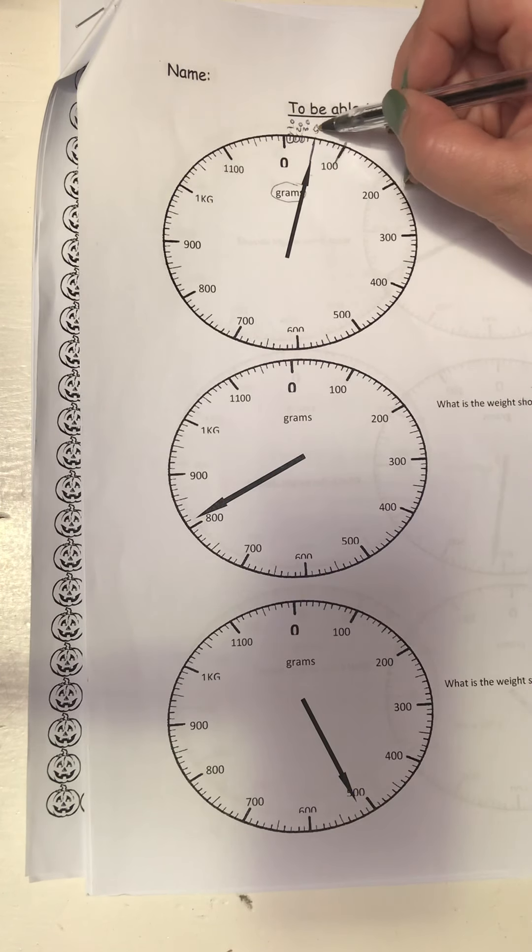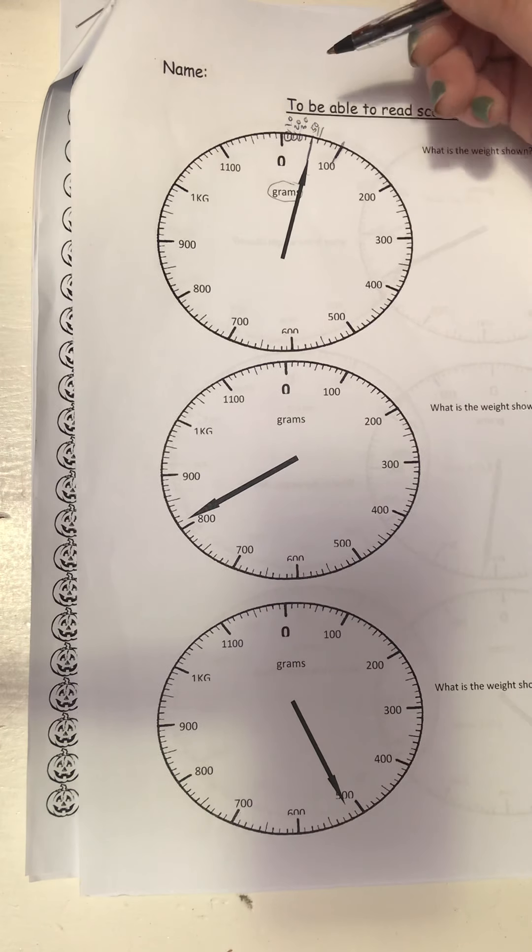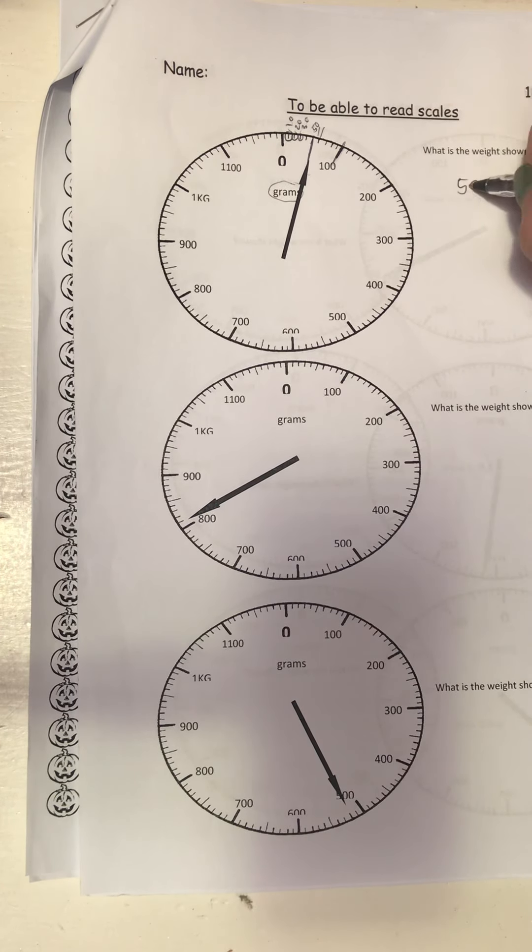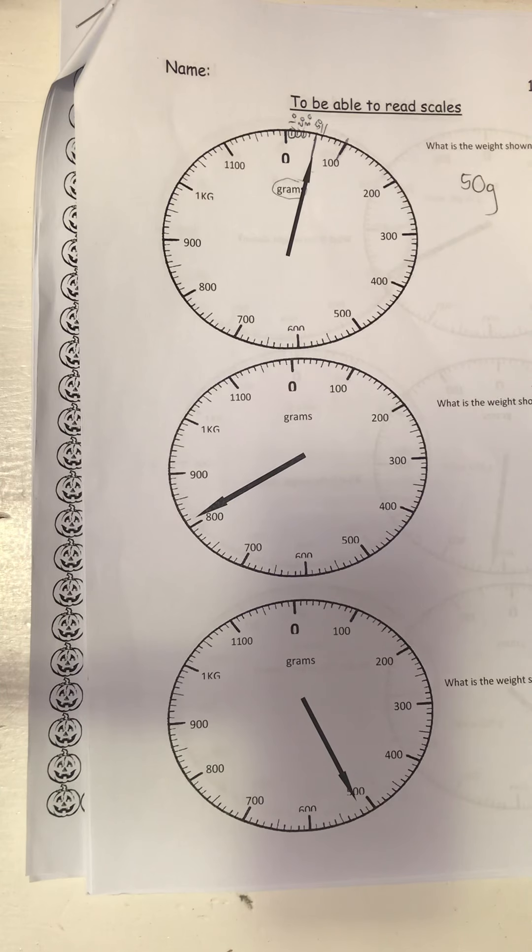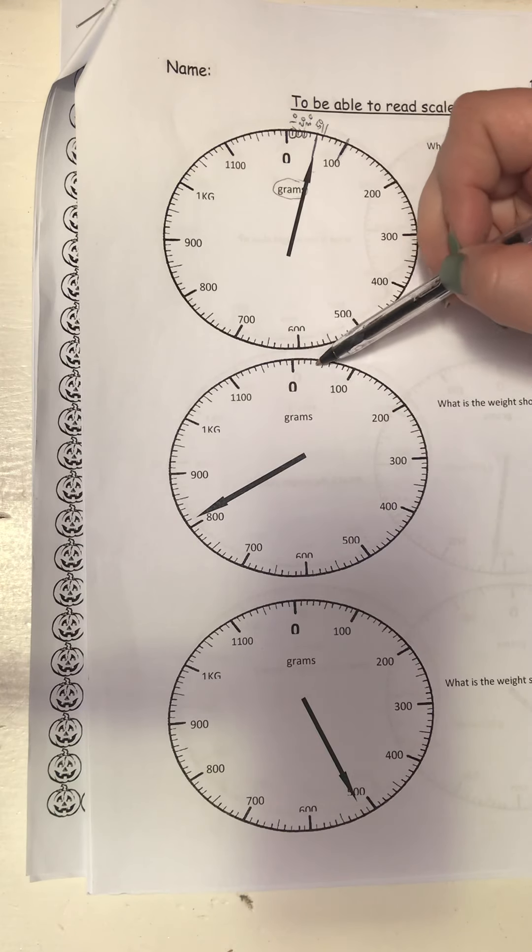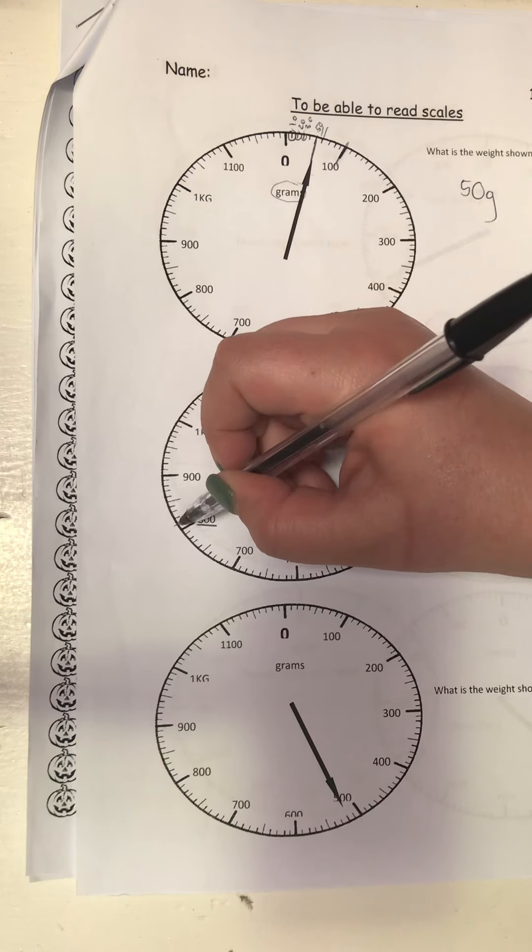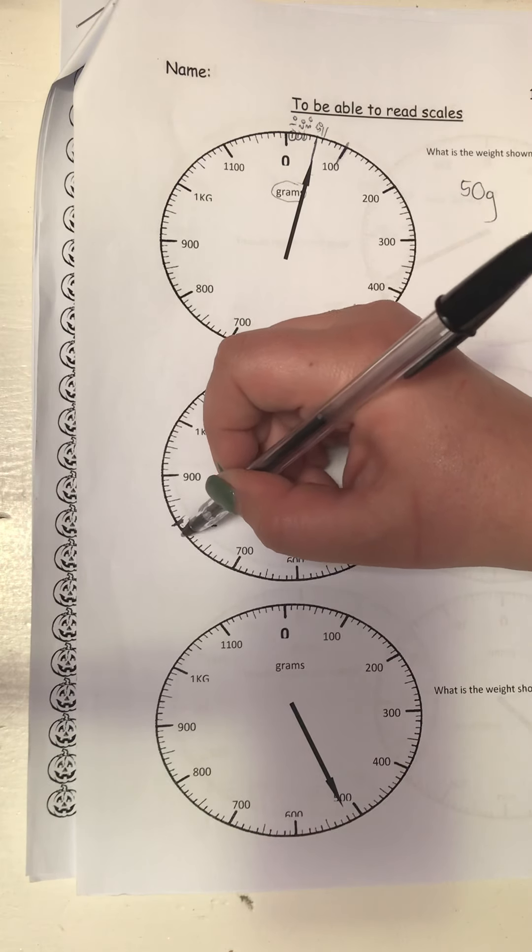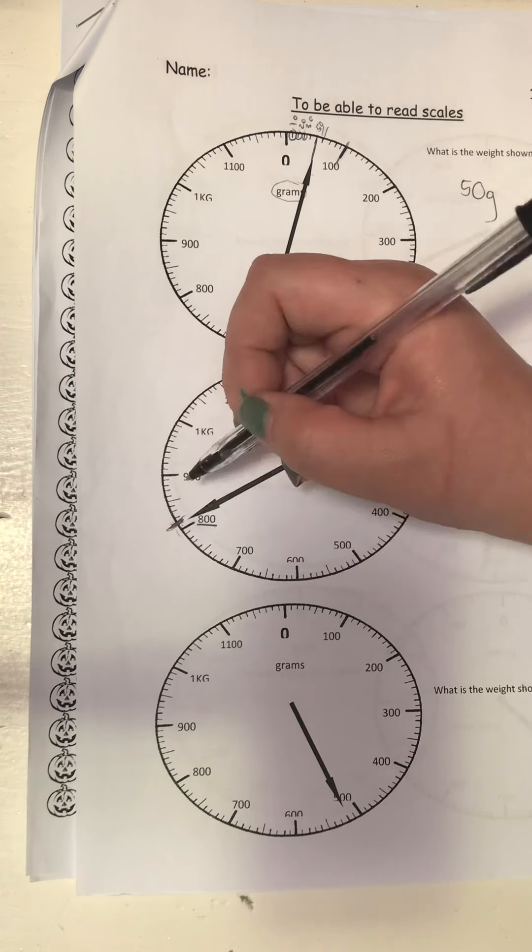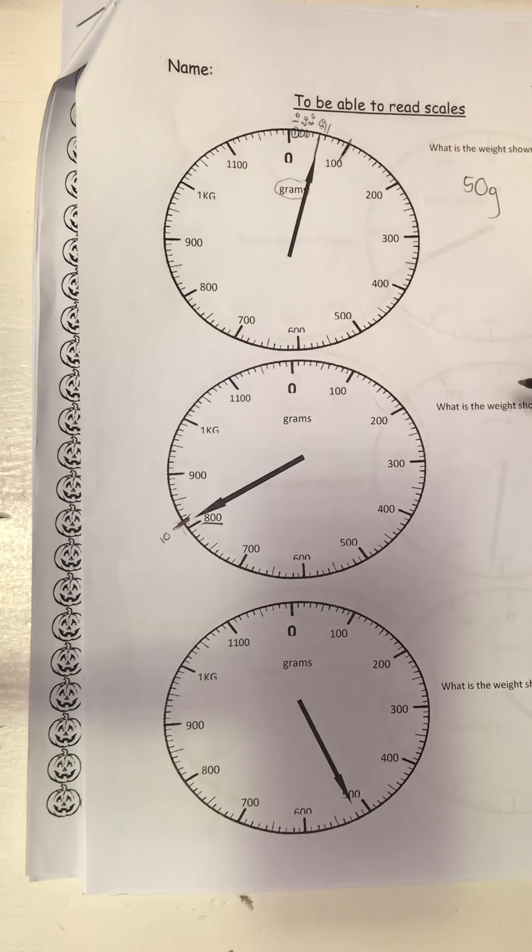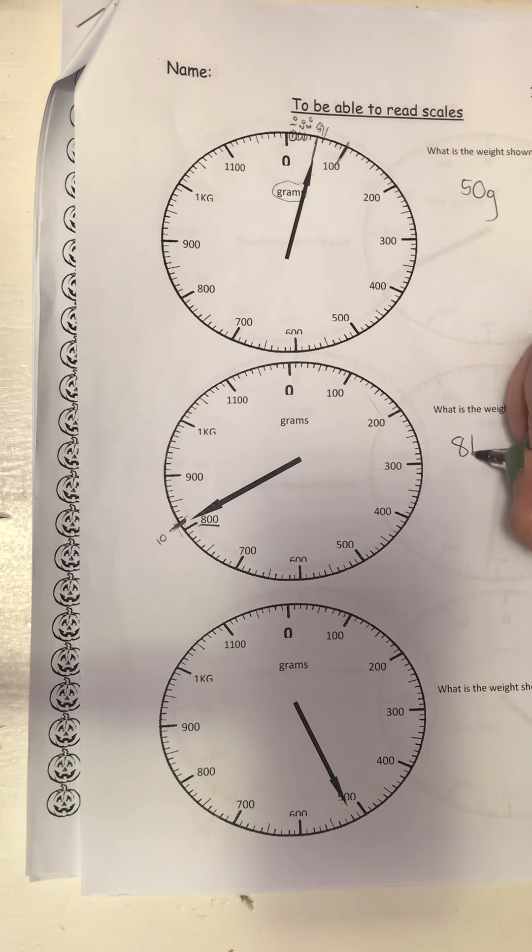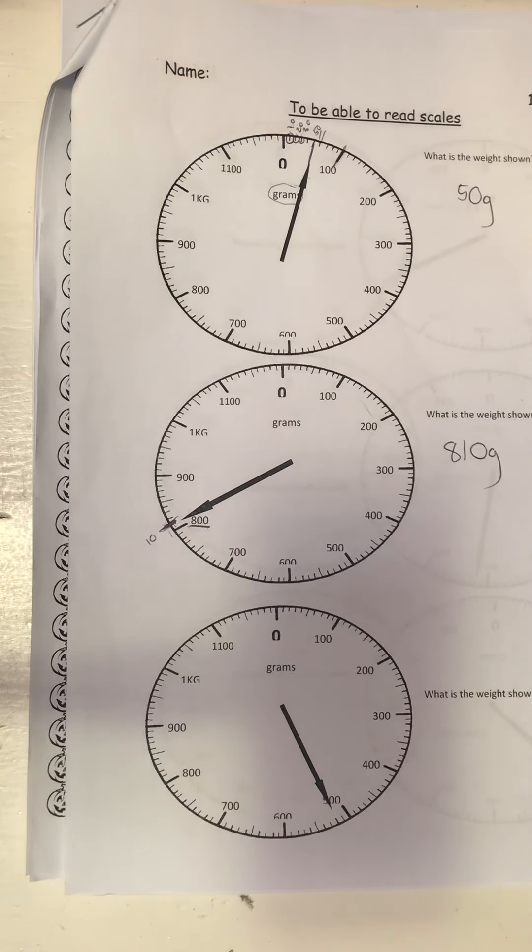And the fact that the arrow is pointing to this one tells me that's 50. So what is the weight shown? 50 grams. If we look at the next one, keep in mind the arrow has gone all the way around to 800 and past it. So it's gone past 800 to this little line. This little line represents 10, so 810 grams. Last one I'm going to leave for you to do by yourself.